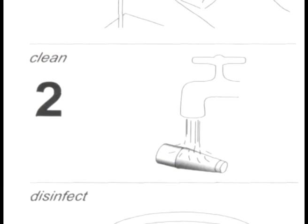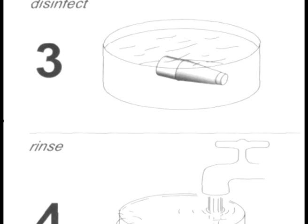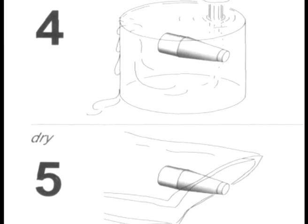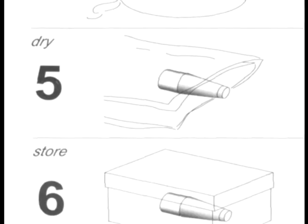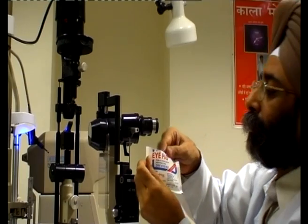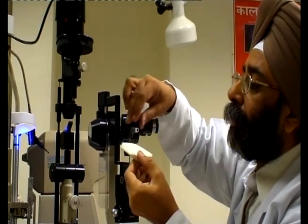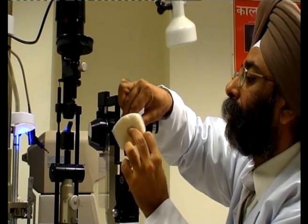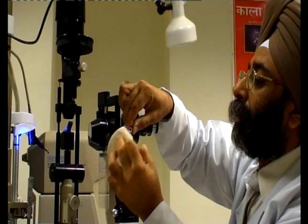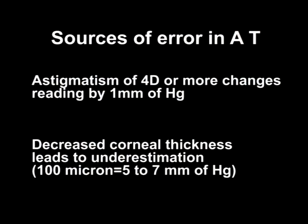Disinfection of the prism is best done by home bleach, sodium hypochlorite, 3% hydrogen peroxide, mild soap, or proprietary disinfectants recommended by manufacturers. For cleaning in between cases, using hydrogen peroxide, dilute bleach, or simply distilled water are the most practical. One should make sure that the prism tip is dried before use to avoid getting excessively broad mires.